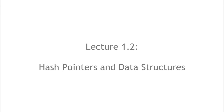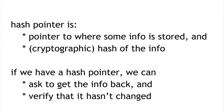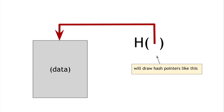In section 1.2, we're going to talk about hash pointers and their applications. A hash pointer takes a pointer to where some information is stored and stores alongside it a cryptographic hash of that information. Whereas a regular pointer lets you retrieve information, a hash pointer also lets you verify that the information hasn't changed. So a hash pointer tells us where something is and what its value was. We draw a hash pointer in diagrams as 'h of' followed by an arrow pointing to the data.